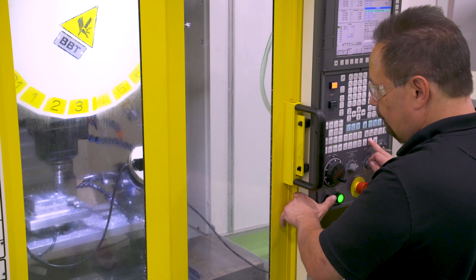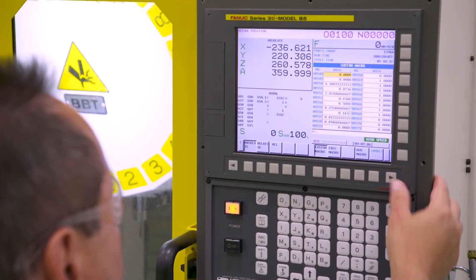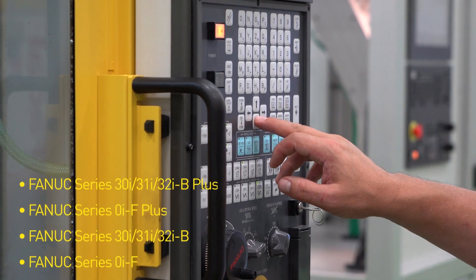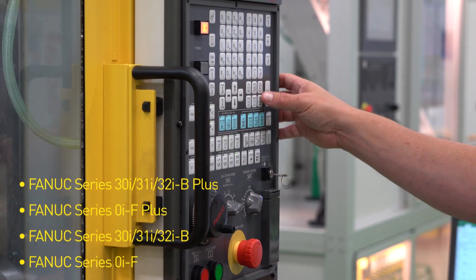Fast Cycle Time Technology is a suite of functions in the FANUC CNC that will help you improve your productivity. Fast Cycle Time Technology comes built into our 30 IB and 0 IF CNC series, including the latest Plus Controls.